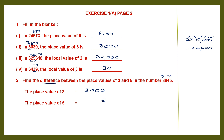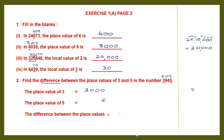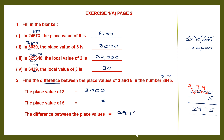Now we have to find the difference — that is subtraction. So let's subtract 3,000 minus 5. We need to borrow from 3, so this becomes 2, then 10 and 9, then 10 and 9, then 10. So 10 minus 5 is 5, then we have 9, 9, and 2. So the difference between the place values is 2,995.